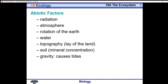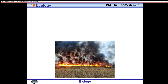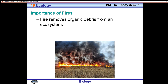Gravity is also an abiotic factor — it is responsible for causing things like tides, and some biospheres are affected by tides as they come in and go out. Fire is another abiotic factor. Fire is not always harmful — it removes organic debris from an ecosystem. If not managed properly, we can have forest fires and prairie fires, but fire is also responsible for enriching the soil. Studies have shown that fires are not necessarily always bad; they do help enrich the soil.